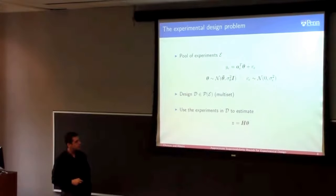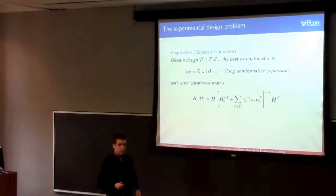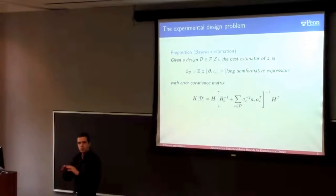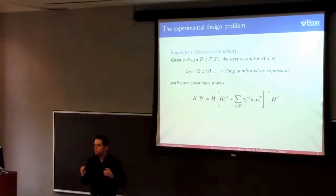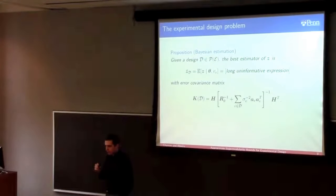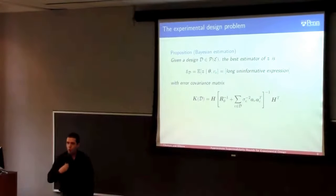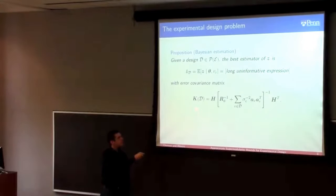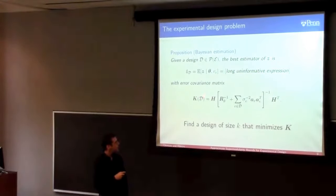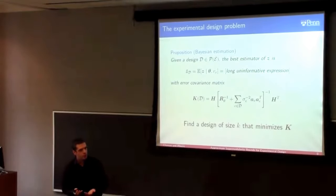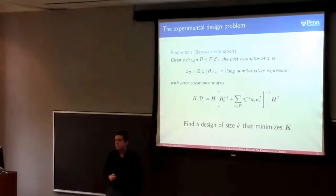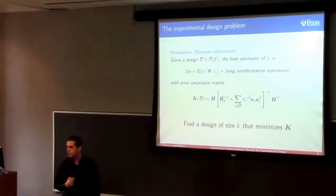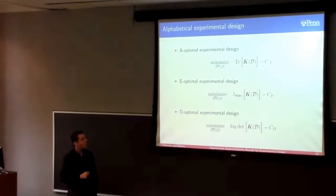Given the design, the problem of estimating Z has a well-known form as a Bayesian estimation problem, such that the error of the estimator is well-defined and can be written in closed form as an error covariance matrix. So our problem is not the estimation itself, but actually designing D. The goal is to find a design D of a certain size — our budget, representing how many experiments we are allowed to run — such that we minimize this error covariance matrix. Minimizing matrices is a difficult problem even for positive semi-definite matrices, so we look at scalarizations, leading to what is called alphabetical optimality criteria in the experimental design literature.